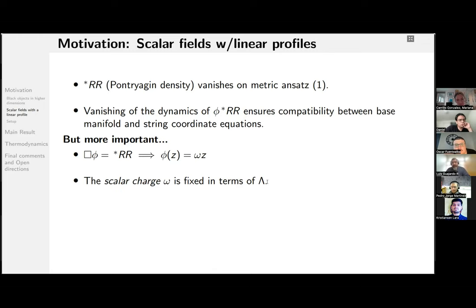You can get rid of the affine parameter again by diffeomorphisms. And the scalar charge, the ω in here, again gets fixed in terms of the cosmological constant. Just as a curiosity... What is fixing ω in terms of λ? The requirement that the string and the base manifold has to be compatible with each other. Ah, okay. Because you obtain two values for R. Uh-huh, I see. Thank you.